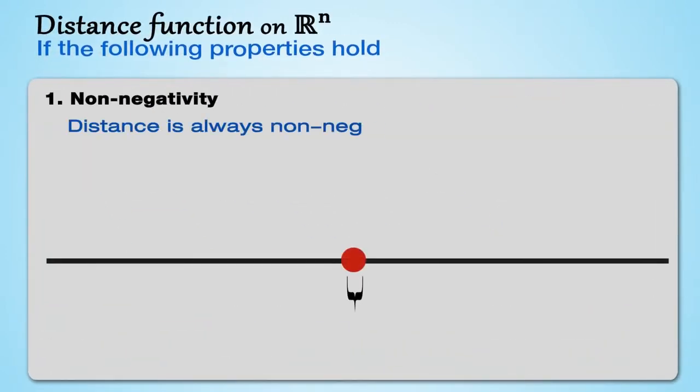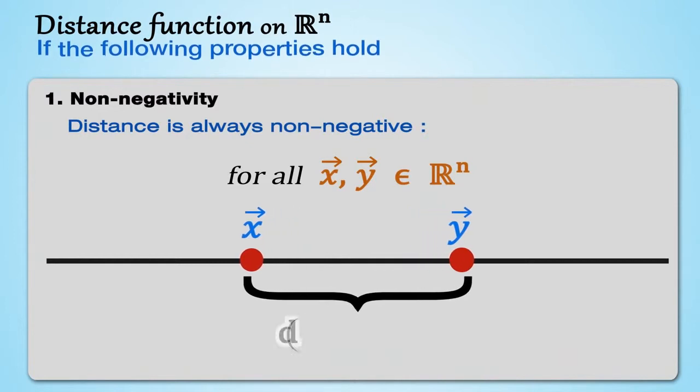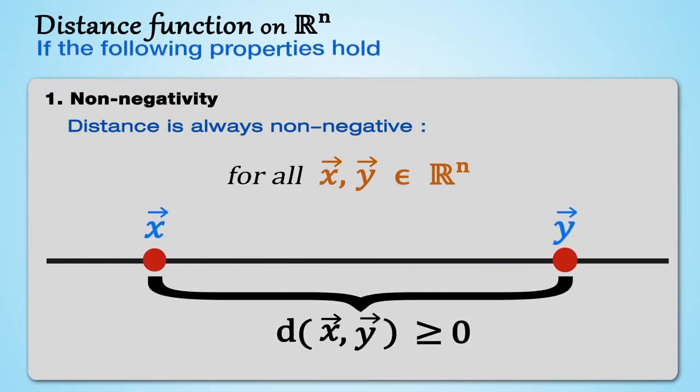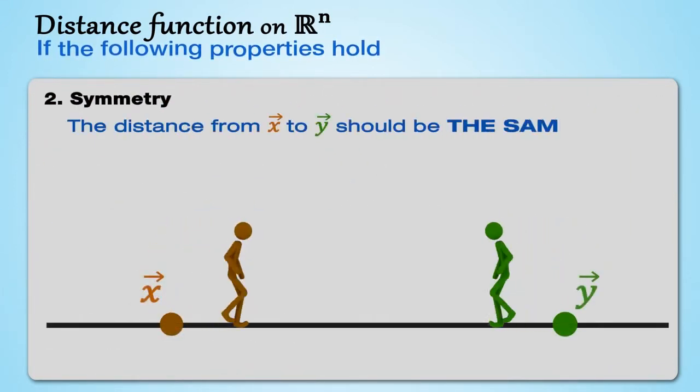Distance is always non-negative. For all x and y in ℝⁿ, d(x,y) is greater than or equal to zero.